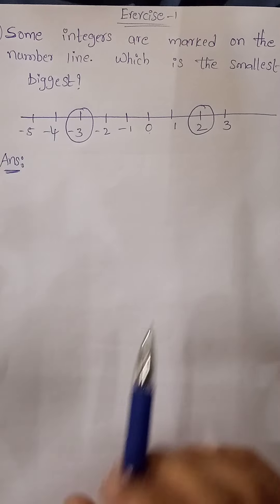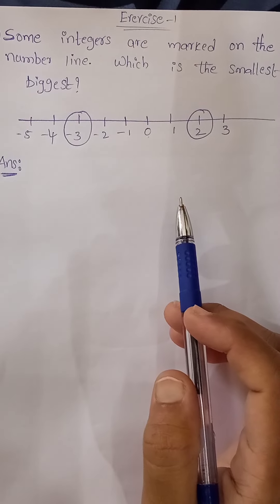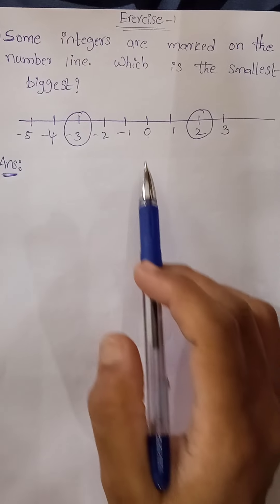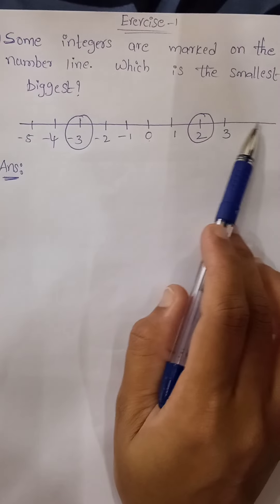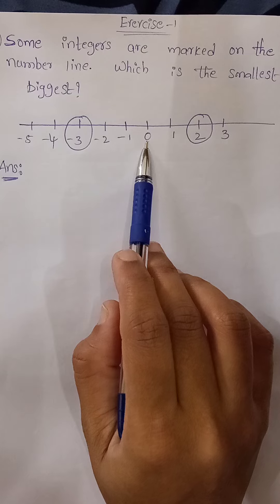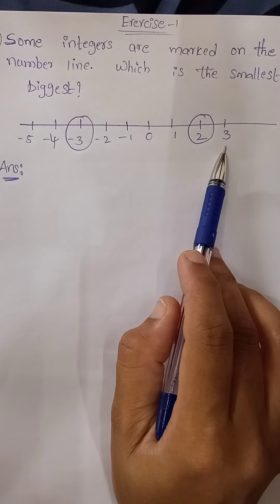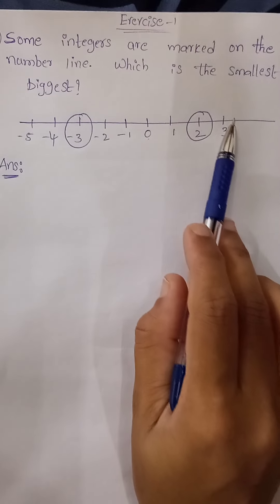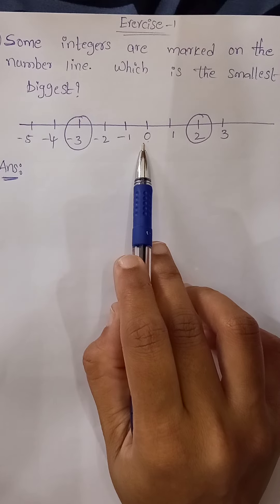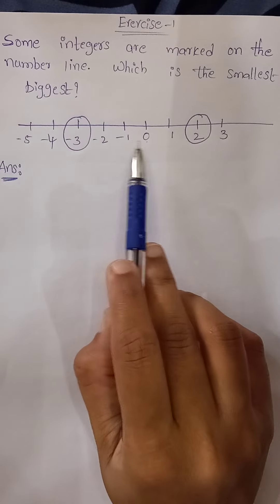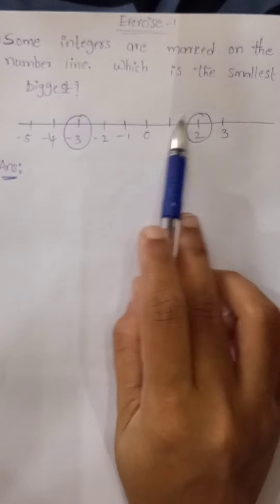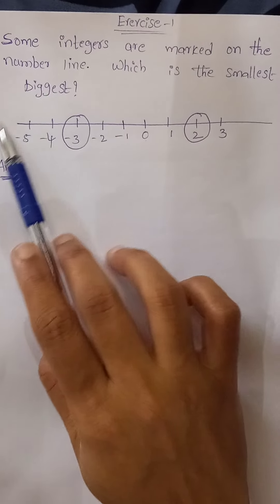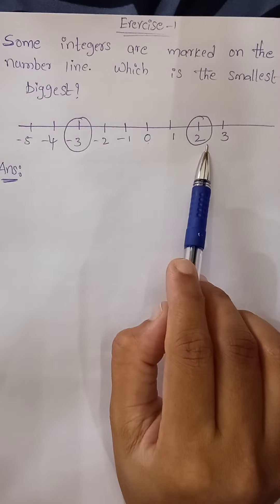Hi children, today I am going to solve exercise problems regarding integers, Chapter 1, Class 7. Before going to solve problems, let me give you an introduction about integers. Here we have a number line. On this number line, 0 is the middle value. On the right side of 0 we have positive values, and on the left side of 0 we have negative values. Always positive values are greater than 0, and 0 is lesser than positive values and greater than negative values, and negative values are smaller than 0 and positive values.